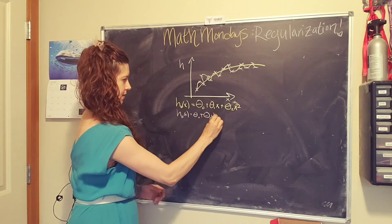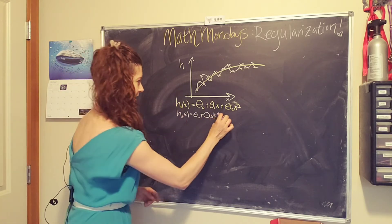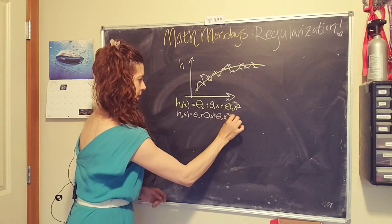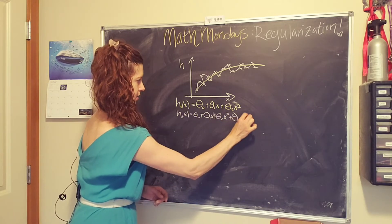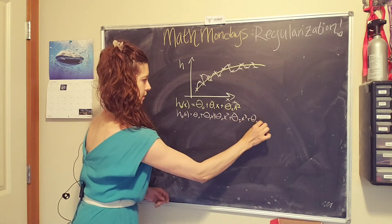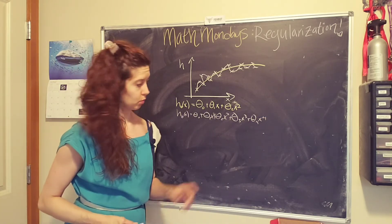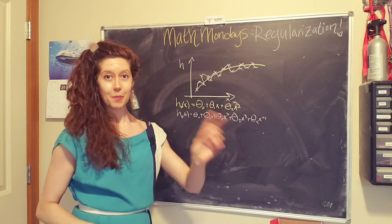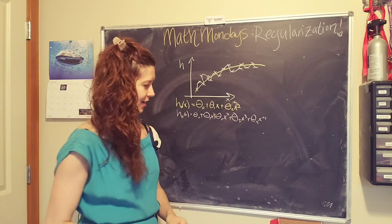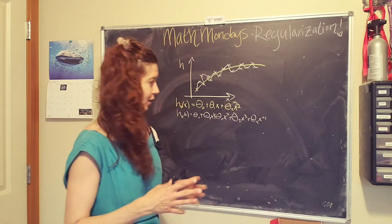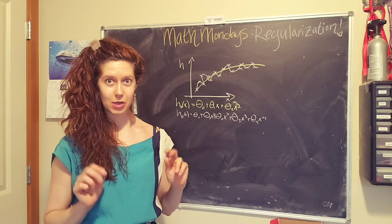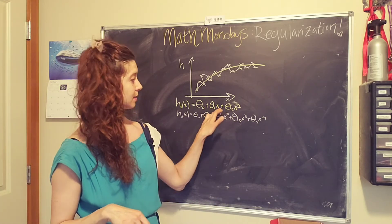The equation for this line might be like theta_0 plus theta_1 x plus theta_2 x squared plus theta_3 x to the third plus theta_4 x to the fourth. So too complicated, we don't want this, we want this.